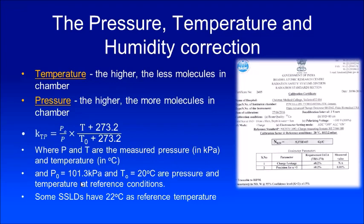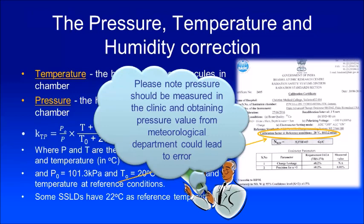Please note it is not always 20 degrees centigrade at which the SSDL calibrates — some SSDLs calibrate at 22 degrees centigrade, in which case T0 becomes 22. One has to be very careful about these values. Without looking at your calibration certificate, do not start your absorbed dose measurement.